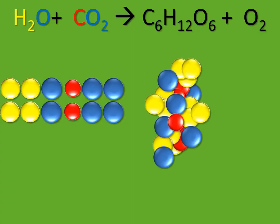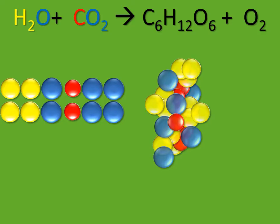A glucose molecule is large and contains six carbons, twelve hydrogens, and six oxygens. The plant doesn't have enough atoms yet, so it has to take in more water and more carbon dioxide.